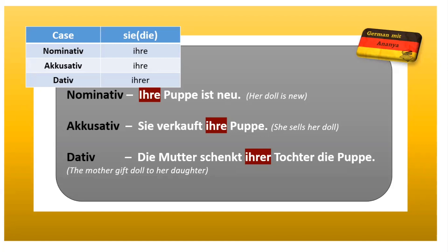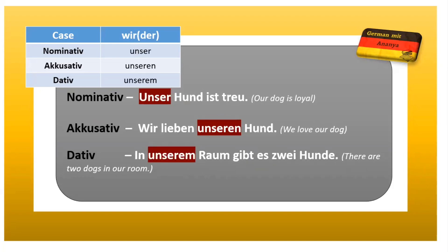For 'wir' — we — the forms are: unser, unseren, unserem. Nominative: 'Unser Hund ist treu' — our dog is loyal. Accusative: 'Wir lieben unseren Hund' — we love our dog. And for dative: 'In unserem Raum gibt es zwei Hunde' — there are two dogs in our room.